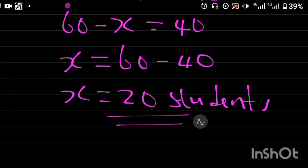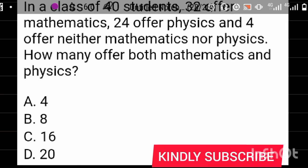We have 20 students who offer both mathematics and physics. Let's check the options and see which of the options is correct. Option D is actually the correct answer.